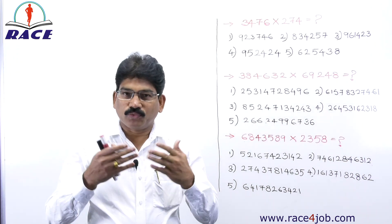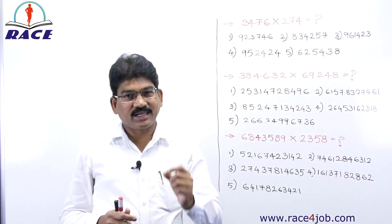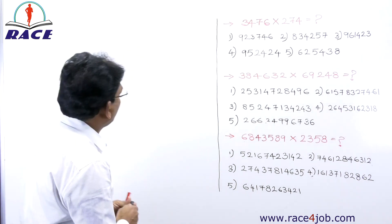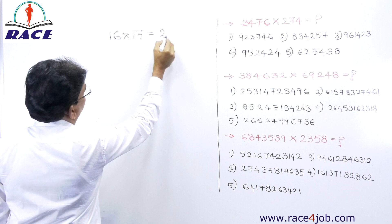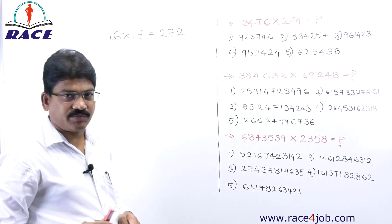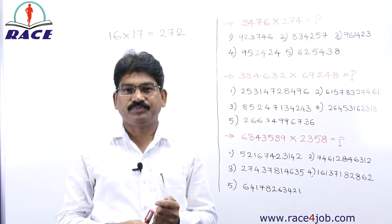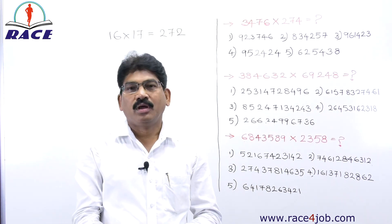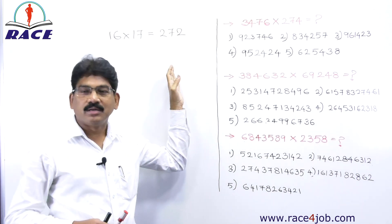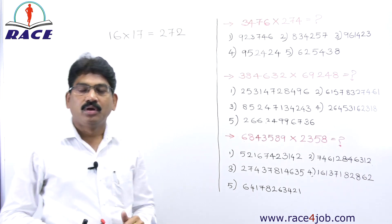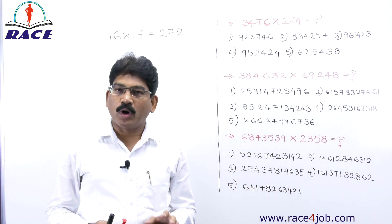To understand this technique, I'll take a simple question first. Say 16 into 17 is 272. Let us see whether it is the right answer or not. Here a question is given and also the answer. With our approach, without multiplying the numbers, we can find the answer. In the examination, they ask you what is the answer, so we have to find the correct answer from the options.